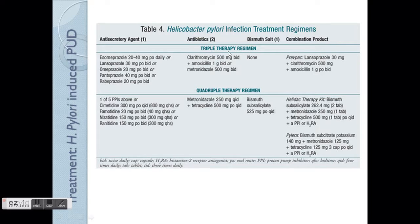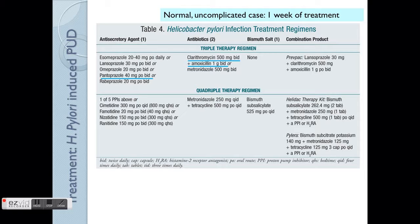The common antibiotics used are clarithromycin plus amoxicillin or metronidazole. These can be combined with any PPI — Omeprazole, Pantoprazole (a very common one), or Esomeprazole. For quadruple therapy, the add-on is Bismuth. For normal uncomplicated cases, it's just one week of treatment. So far, H. pylori may have some resistance to antibiotics, but it's still quite straightforward — one week of treatment and the person is normally cleared.